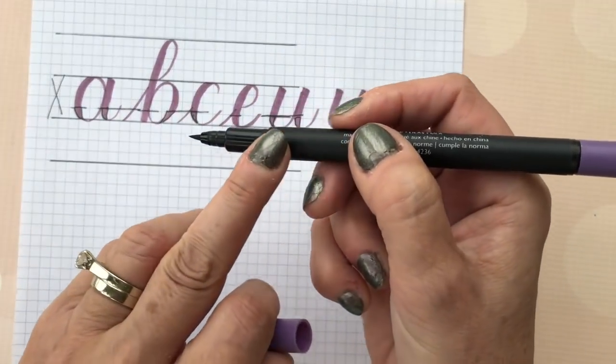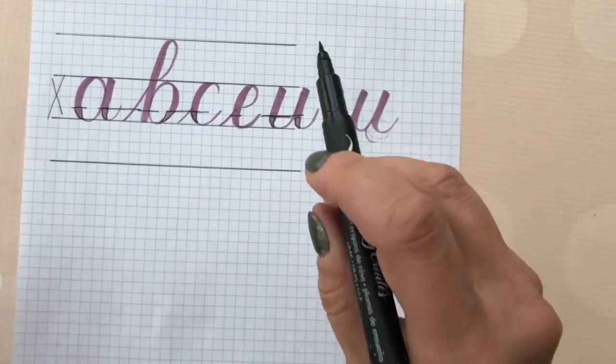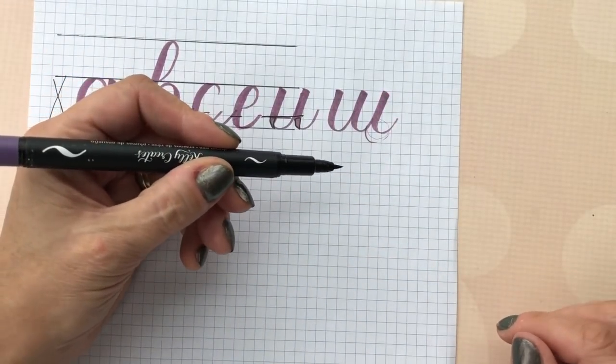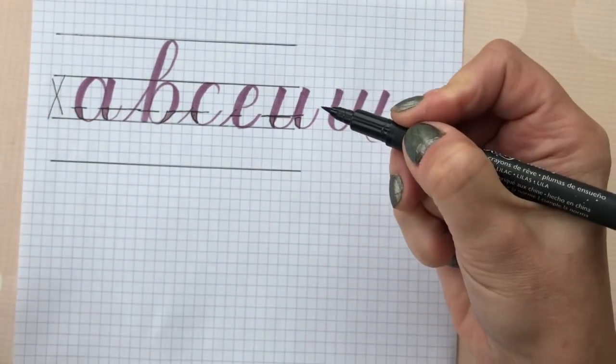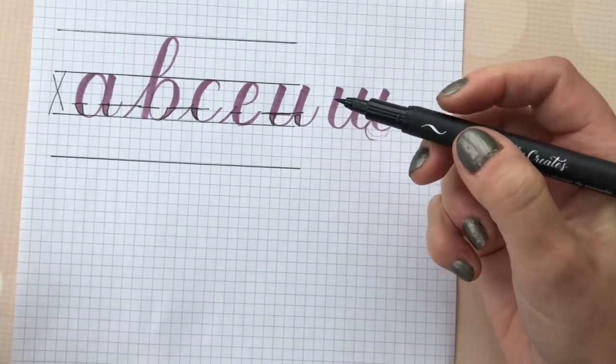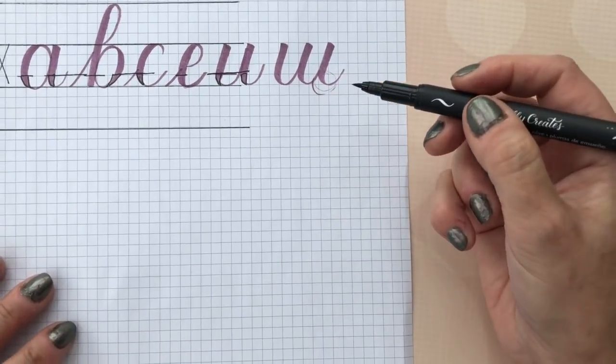So hold it up high on the barrel. Even if you're a lefty, you are holding it high on the barrel and do not choke it up. Don't grip it really tightly. I have a very light grip, a nice loose grip.